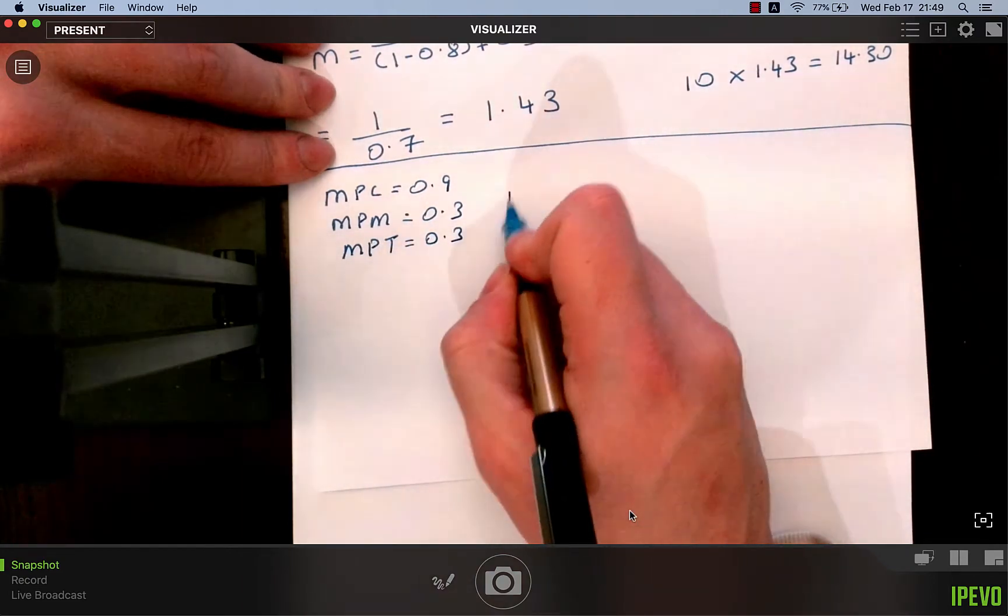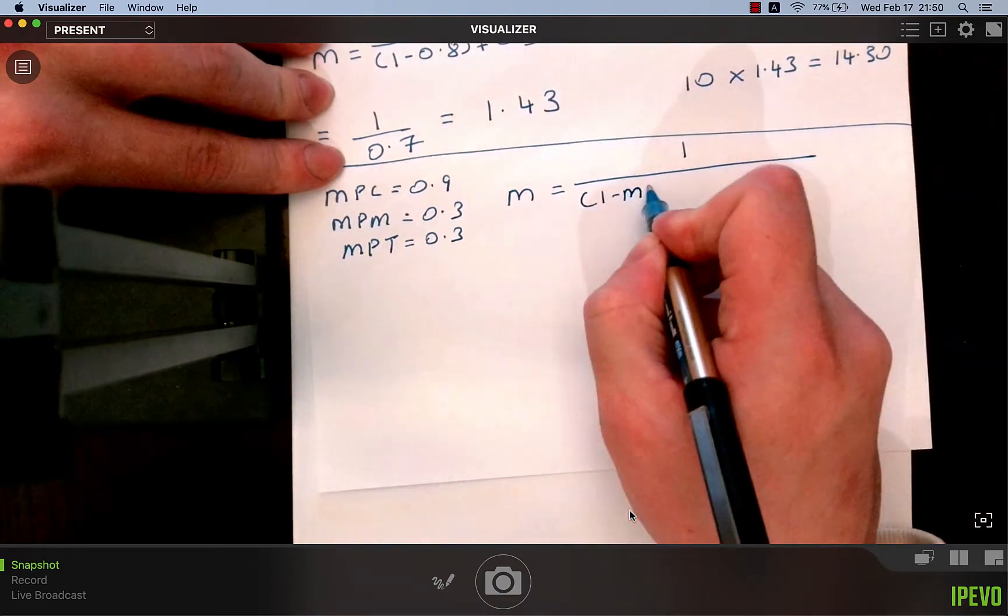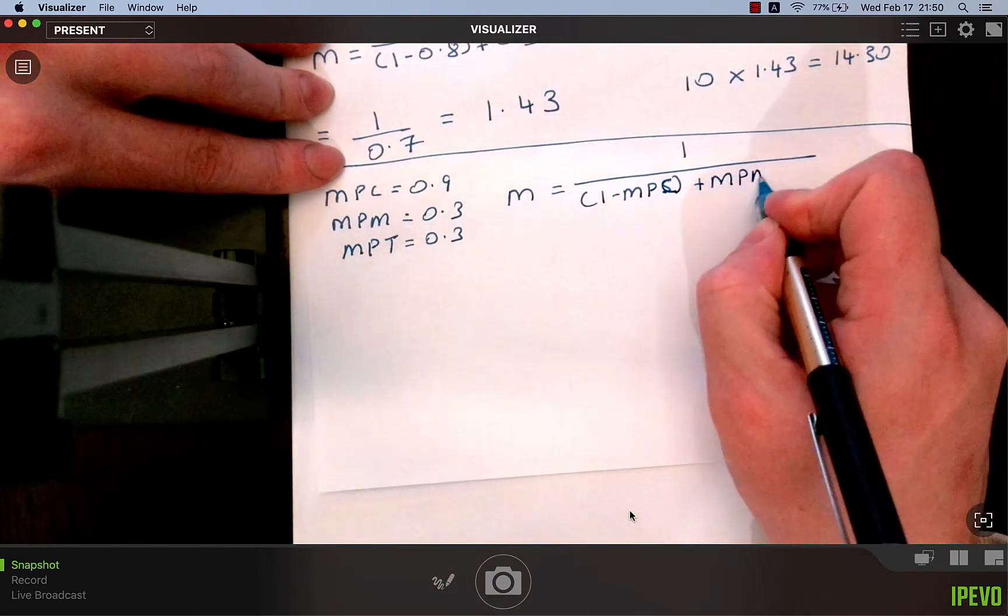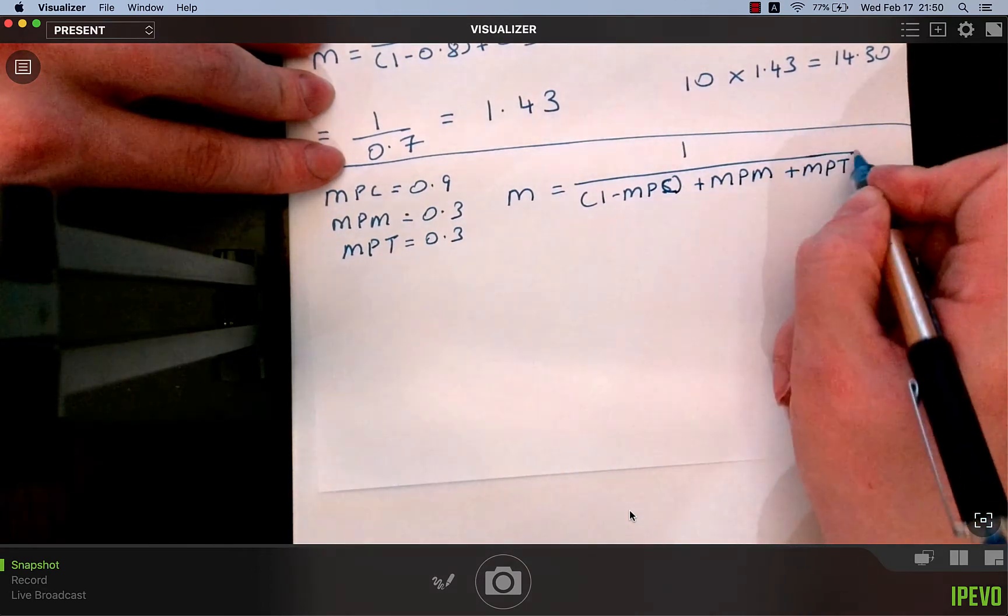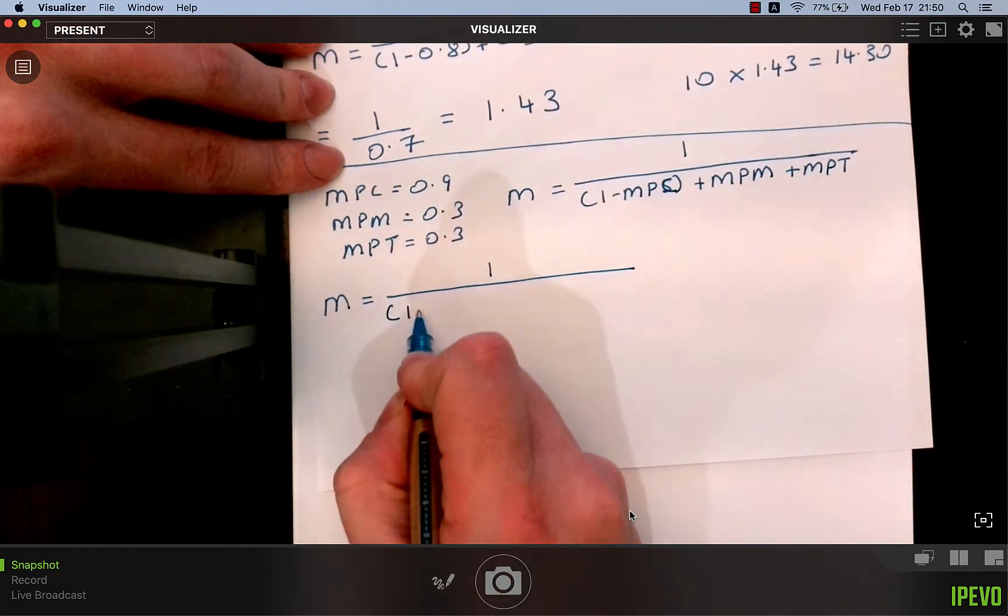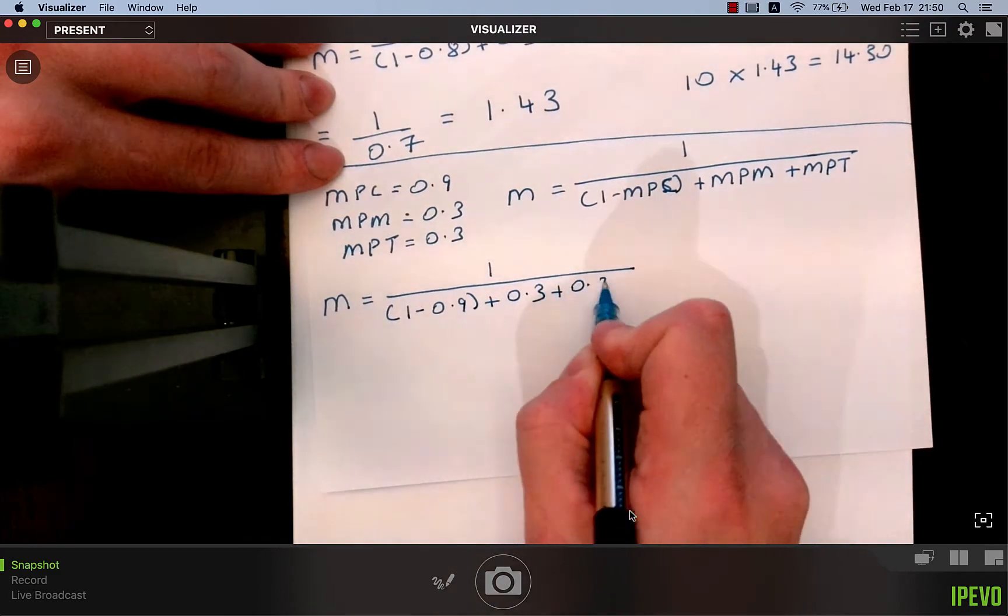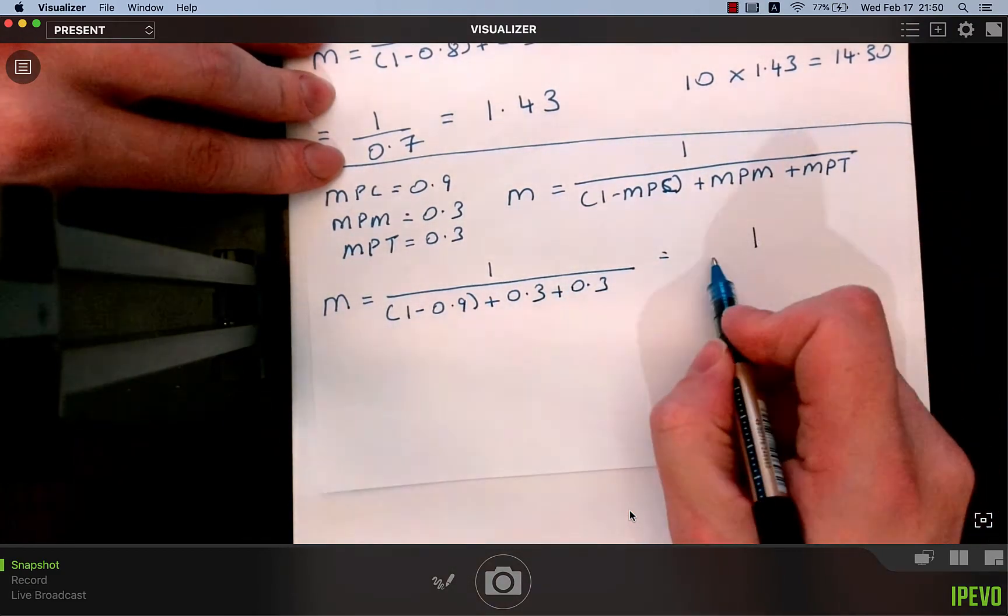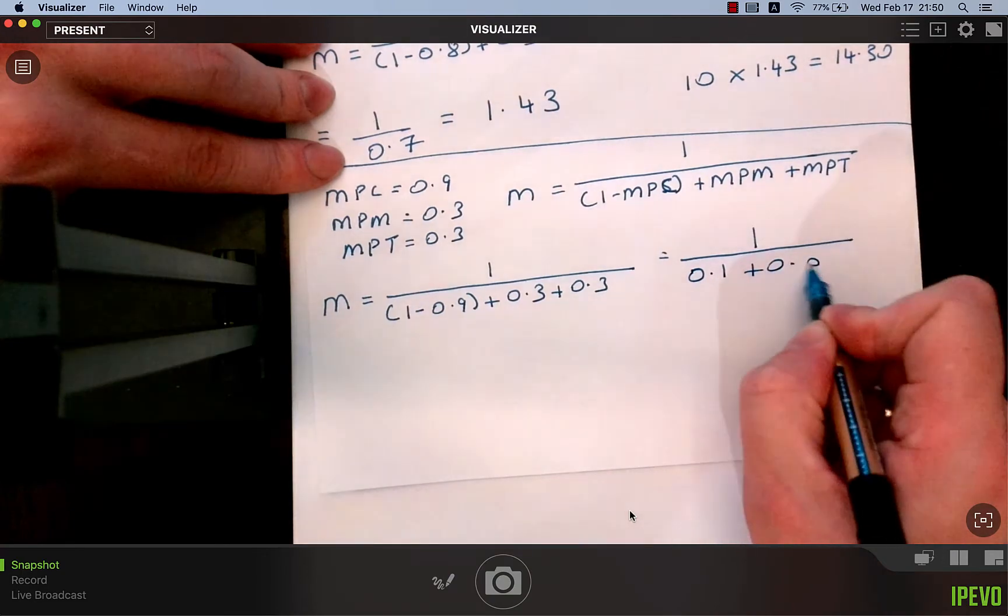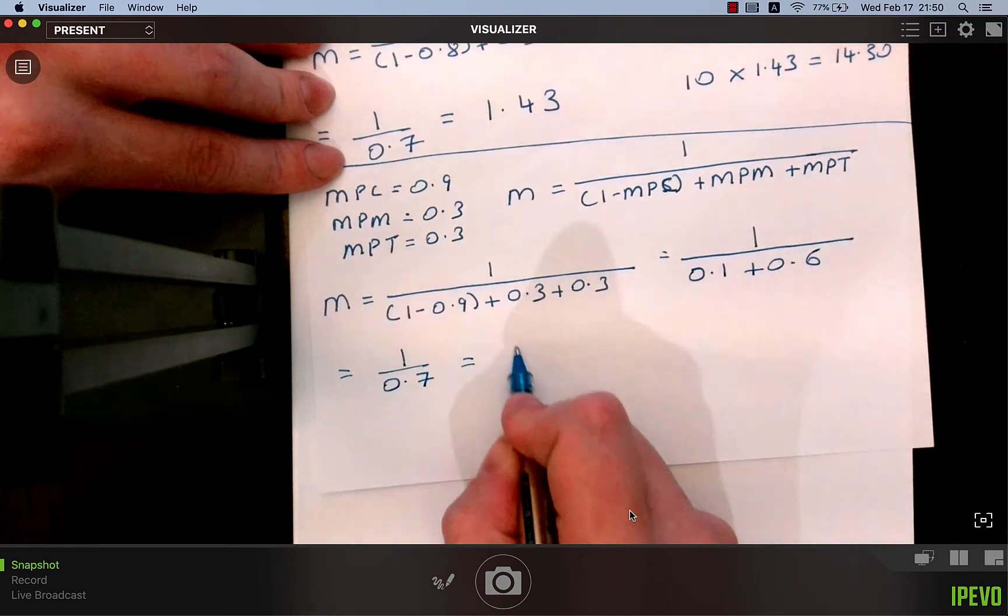What's the formula for the multiplier? 1 over 1 minus MPC, which is the MPS, plus the MPM, plus the MPT. The multiplier equals 1 minus 0.9 plus 0.3 plus 0.3, which is 0.1 plus 0.6, which is 1 over 0.7, which equals 1.43.